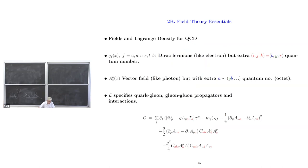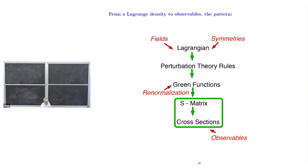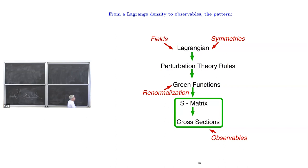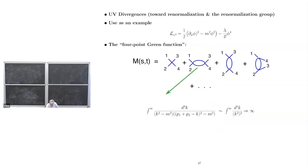This is the QCD Lagrangian, which everybody has seen. Fields and symmetries suggest Lagrangians. From the Lagrangian we get perturbation theory rules, then Green's functions, we renormalize them, and from renormalized Green's functions in the S-matrix via LSZ reduction we get cross-sections and observables. We had some examples in φ⁴ theory. Here's something interesting that we'll come back to in the following two lectures in a serious way.